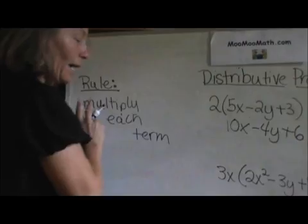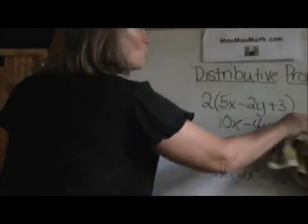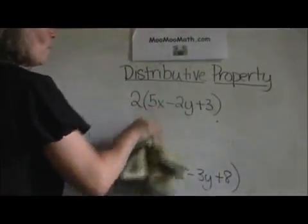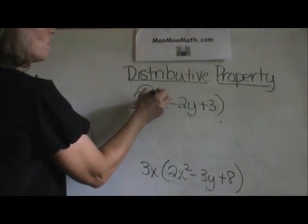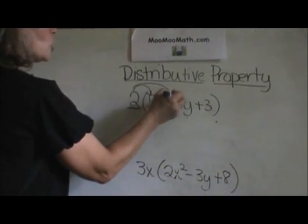So now let's go back and break this down into slow-mo here. So we're going to take this 2 and we're going to multiply it times each term.